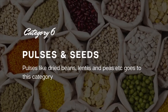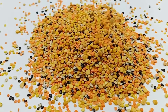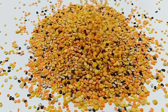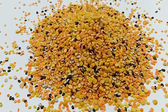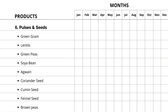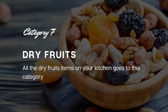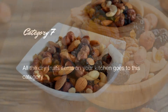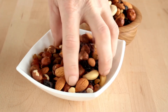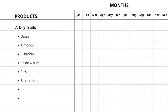The 6th category is pulses and seeds. Pulses like lentils, peas, etc. and seeds like mustard seed, fennel seed, etc. go in this category. The seventh category is dry fruits — all the dry fruit items in your kitchen go into this category.